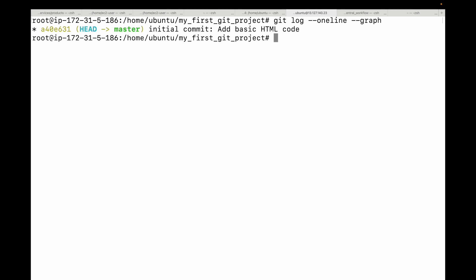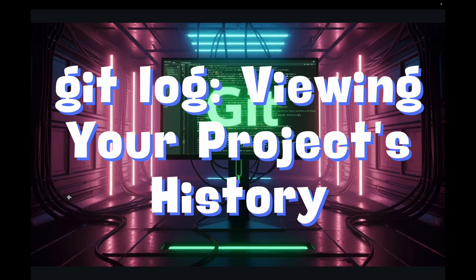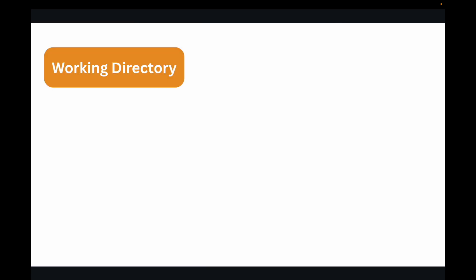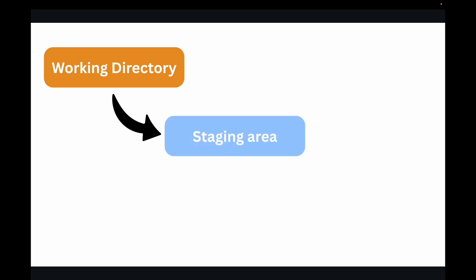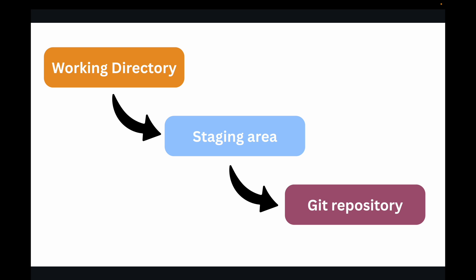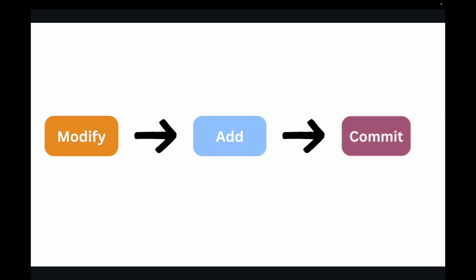You have just performed the core Git workflow: you work in the working directory, decide what changes to save by moving them to the staging area with git add, permanently record those staged changes in your Git repository with git commit along with a descriptive message, and review your progress with git status and git log.